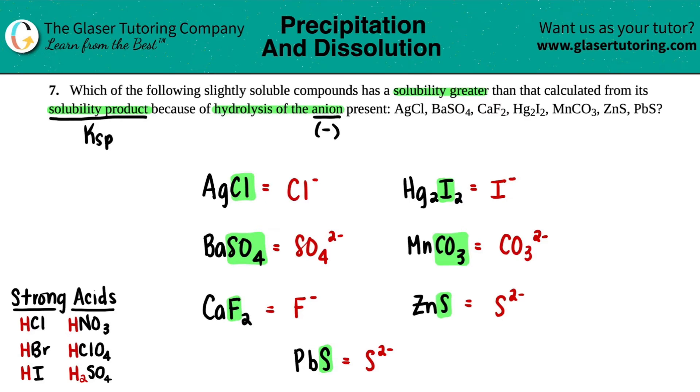Anytime that you're trying to make the solubility greater, we want an anion—because we're talking about anion—that is coming from a weak acid. Because what's going to happen is the anion is going to react with water—that's what hydrolysis is all about.